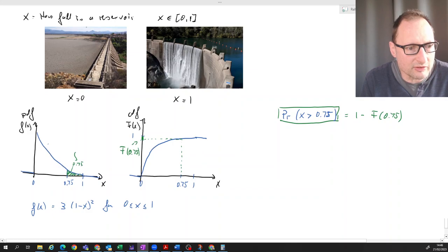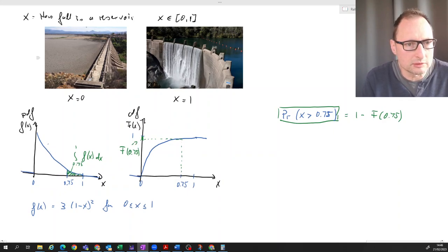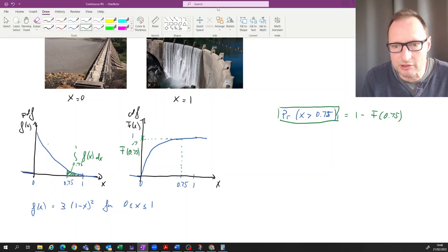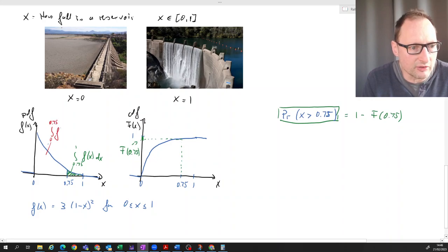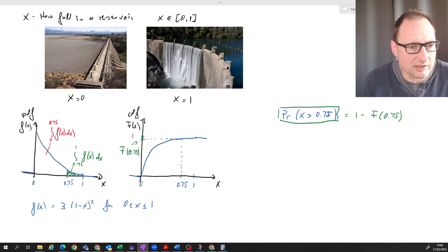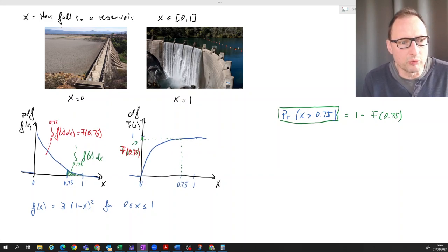So once we have that, we can actually do a little bit more. So we know that this green area here is the integral from 0.75 to 1 of f(x)dx. Or alternatively, let me take a different color, I'll do that in red. This size here, this area is the integral from 0 to 0.75 of f(x)dx, and that is the same as F(0.75).